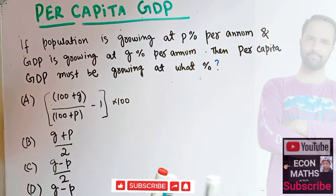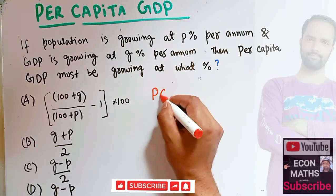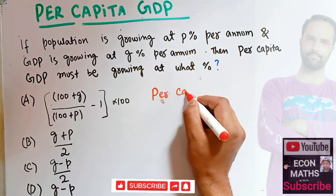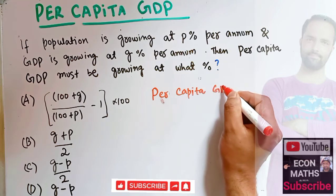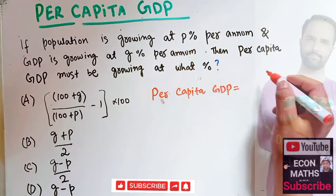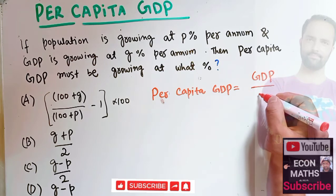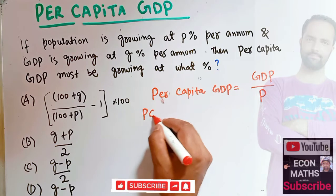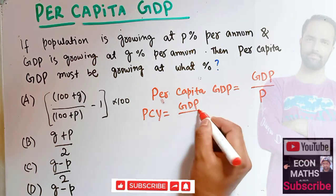Let's find out what is meant by per capita GDP. Per capita GDP is equal to total GDP divided by population. So per capita income equals total GDP upon total population.